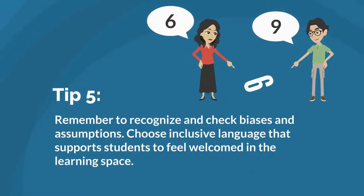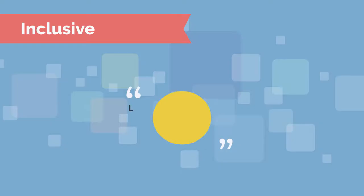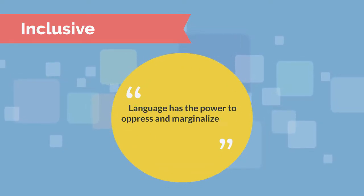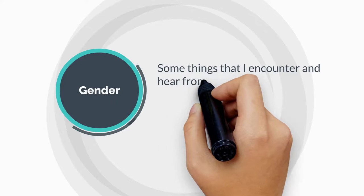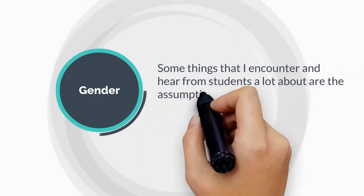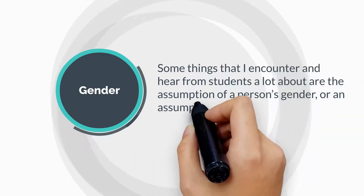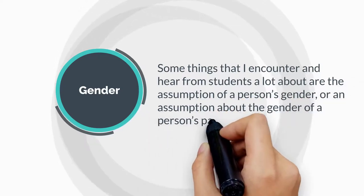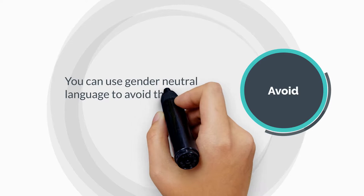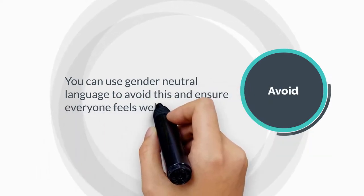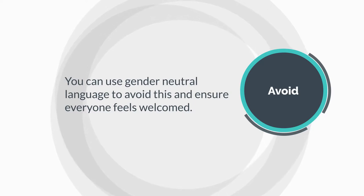Tip 5: be aware of any assumptions or biases that you may have. Choose language that is inclusive of the diversity of identities in your classroom and outside of your classroom. Language, as we know, has the power to oppress and marginalize and it's a really powerful tool. Something I hear from students a lot is the assumption of a person's gender or the assumption about the gender of a person's partner. You can use gender-neutral language to avoid making students feel uncomfortable and ensure that everyone feels welcomed in the space. And that's just one example that I come across often.